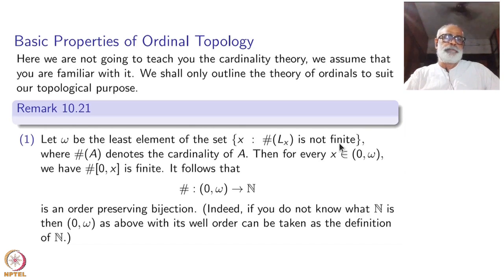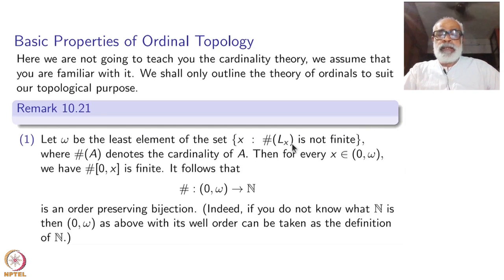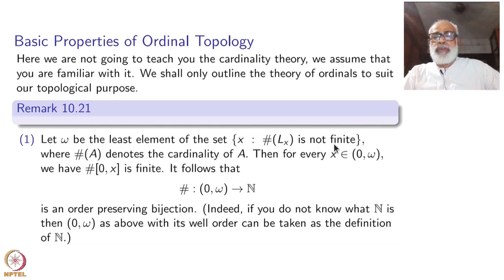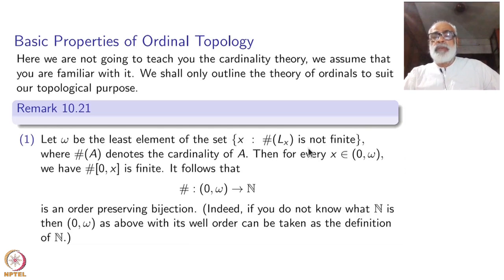For example, if we take 0, L(0) is empty. If we take the immediate successor of 0, it will have only one element, and so on. That is where the theory of ordinals and natural numbers begins. So cardinality of L(x) being not finite — take all such x and take the least element. The least element is also an element of this set.